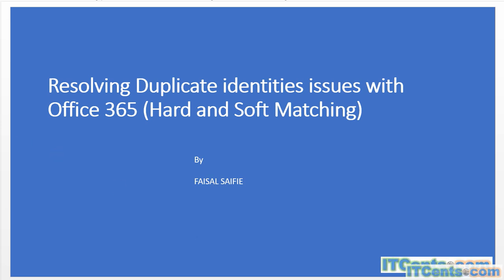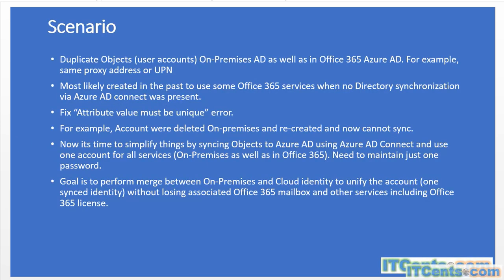What could be possible scenarios for this? Duplicate objects — user accounts — exist on-prem in AD as well as in Office 365. For example, they have the same proxy address or UPN. Or sometimes proxy and UPN addresses are not matching, and when you try to sync, it creates a separate user.